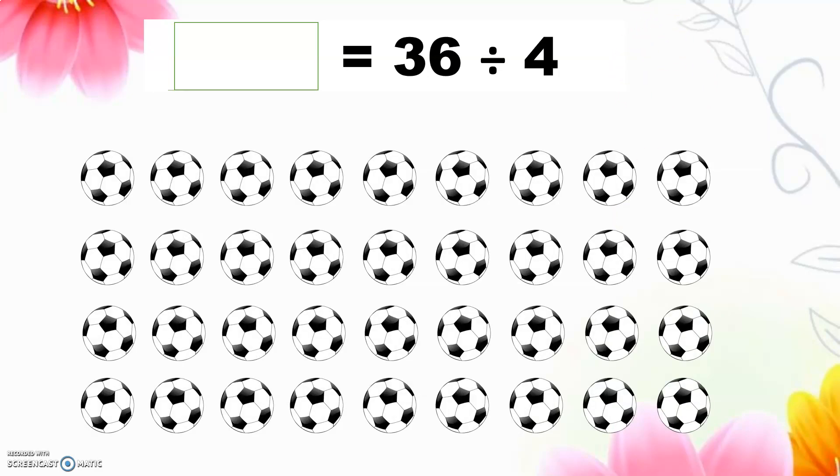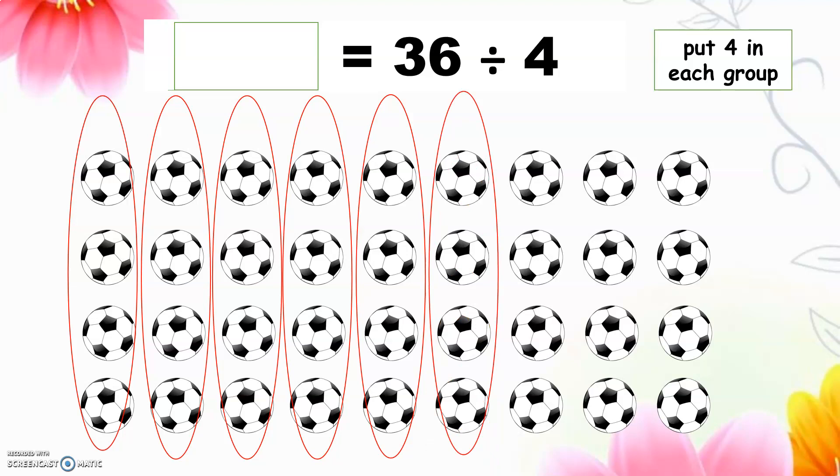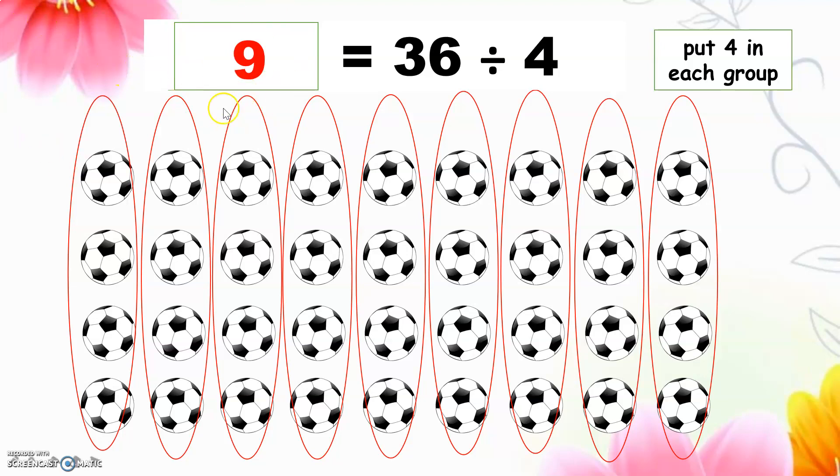So teacher has 36 balls and I want to make 4 in each group. I will circle 4, put 4 in each group. 2, 3, 4, 5, 6, 7, 8, 9. How many groups are here? 9 groups. So the answer will be 9.